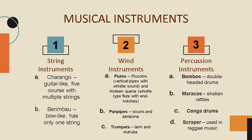Let's start with the string instruments, which basically means instruments that use a string to make sounds. A charango is a guitar-like instrument with five chords and multiple strings. Its body is made from armadillo shell. Next is the berimbaw, which is a bow-like instrument that originated from Africa. It has only one string and is also known as a musical bow.